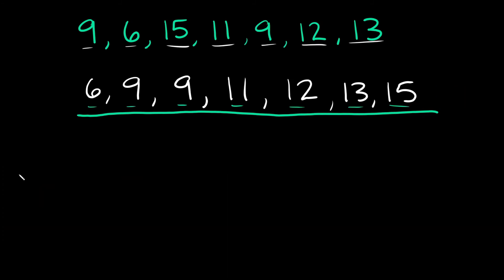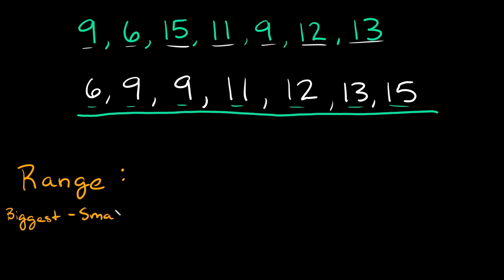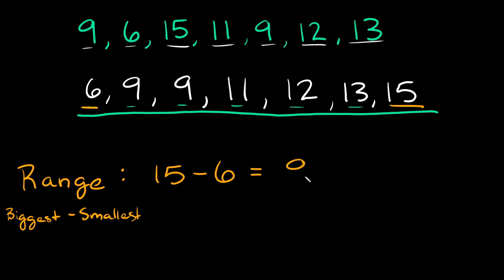Now let's do range. Your range is simply your biggest number minus your smallest number. In this example, the biggest number is 15 and the smallest is 6. So 15 minus 6 equals 9. Your range is 9.